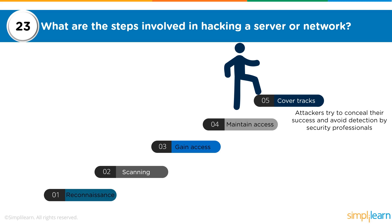Finally, the last step is covering your tracks. All the activity you've performed will have created logs and information that could allow the victim to know they've been compromised and trace activity back to you. To prevent this, you delete logs and references pointing to the activity, hide files you've created such as Trojans or keyloggers, hide processes that were created, and conceal the entire attack to prevent the user from realizing they've been compromised. These are the five steps involved in hacking a server, network, application, or any computing device.